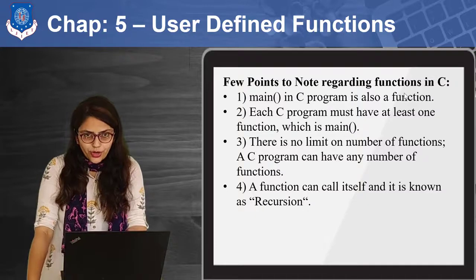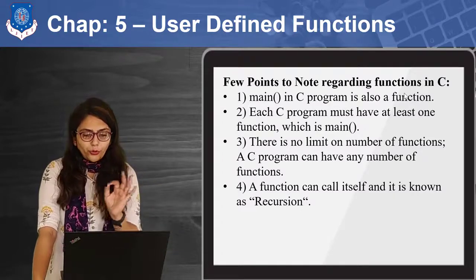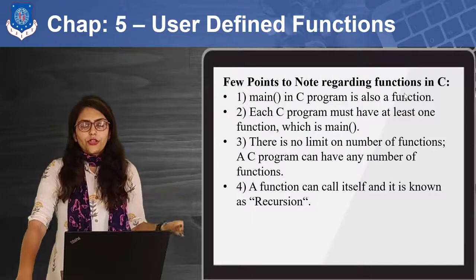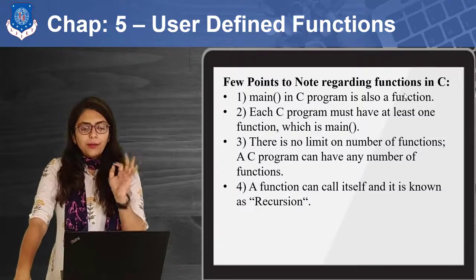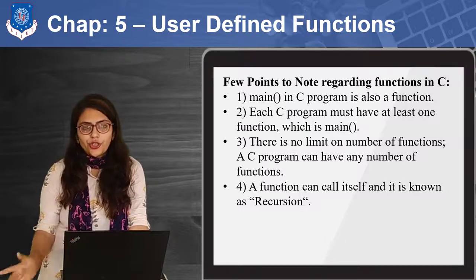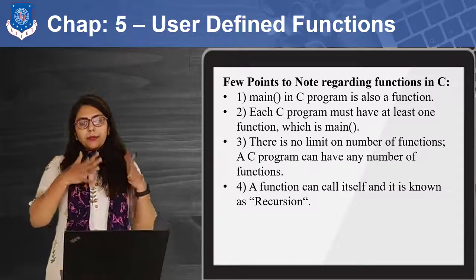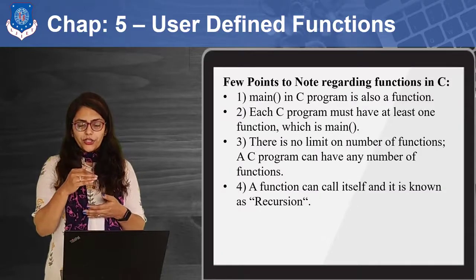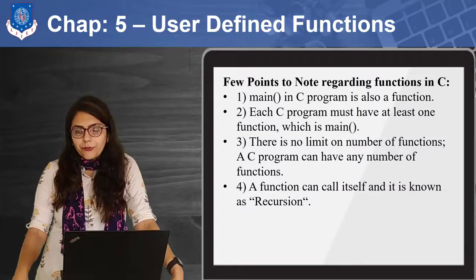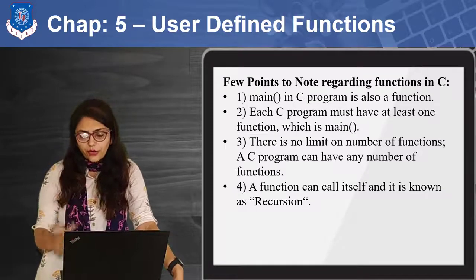A few key points: main in a C program is also a function, so you cannot use 'main' as a function name — there is only one main inside a program. Every C program must have at least one function which is main. There is no limit — you can use any number of functions inside your program. Also, if a function calls itself again inside its own body, that is called recursion. We are going to cover a separate chapter about recursion.